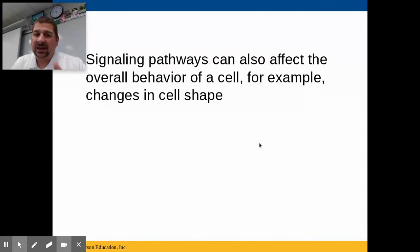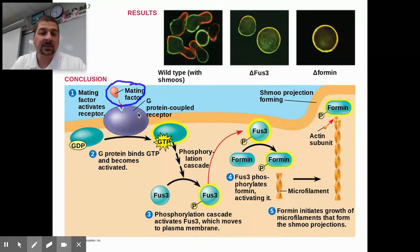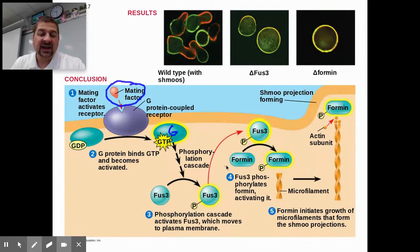Signaling pathways can also affect the overall behavior of a cell. Sometimes it's not making a new protein, not activating an enzyme — sometimes it triggers cell shape changes. Looking at yeast, when two wild types meet and receive the mating signal (the mating factor), the GPCR activates the G protein, which goes through a phosphorylation cascade and activates Fus3. When Fus3 is activated, it phosphorylates formin.